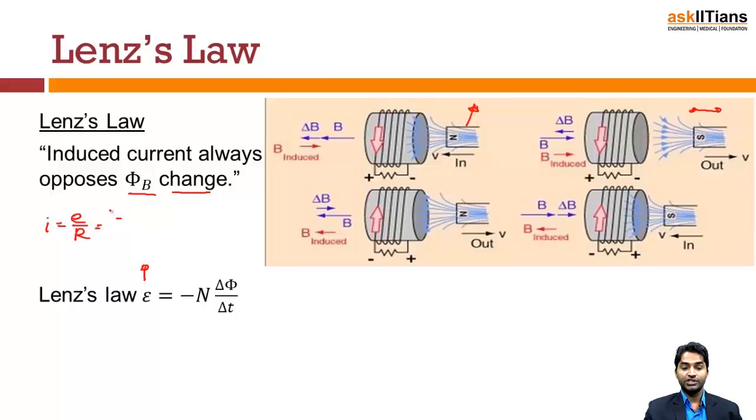Also, the number of turns the magnetic flux is passing and due to the relative motion shows electric current. The point is that this negative symbol represents the opposite tendency.